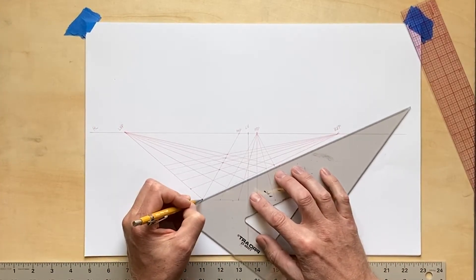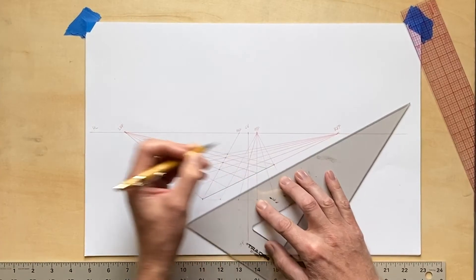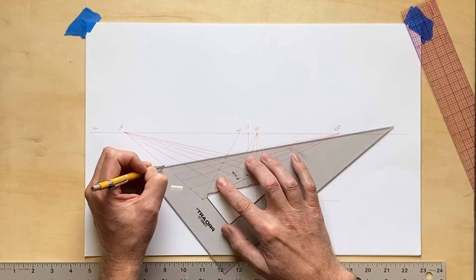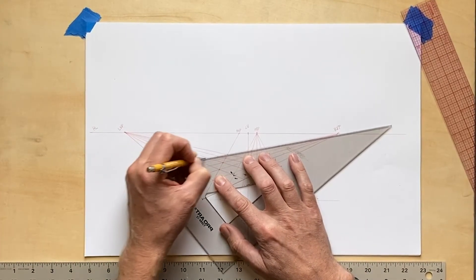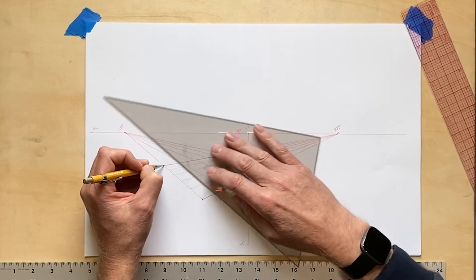So now I just switch to my graphite pencil. And I just need to go over my construction lines with that graphite to reveal my gridded floor plane.